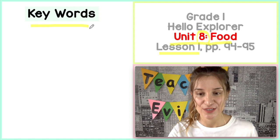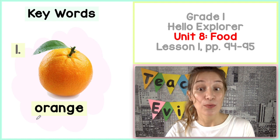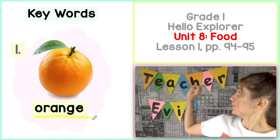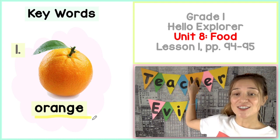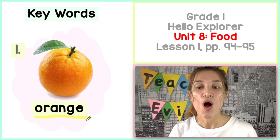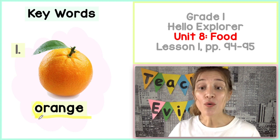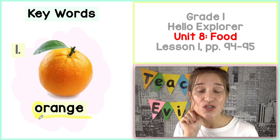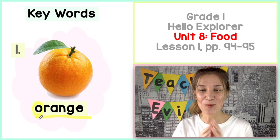Keyword number one. Słówko numer jeden. What is it? Powinniście znać to słówko już, bo ono jest takie samo jak kolor pomarańczowy. I owoc, pomarańcza to jest to samo słówko po angielsku, czyli orange. Orange. Can you say it? Możecie powiedzieć orange. Jeszcze raz? Well done.